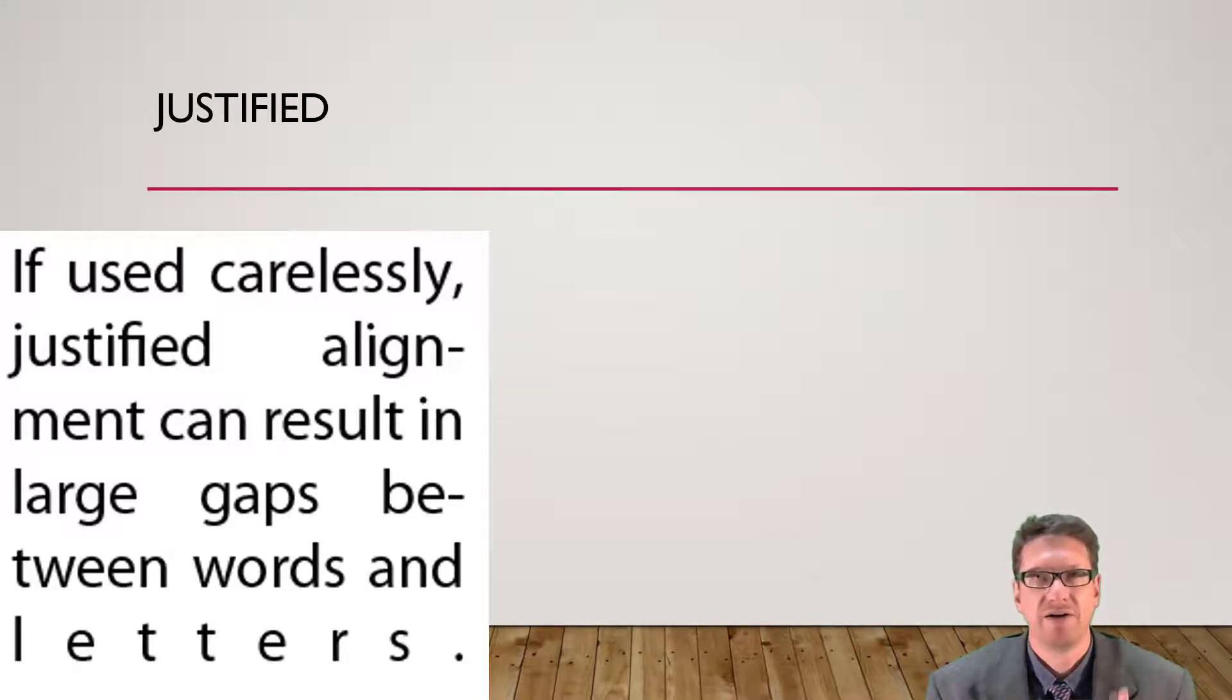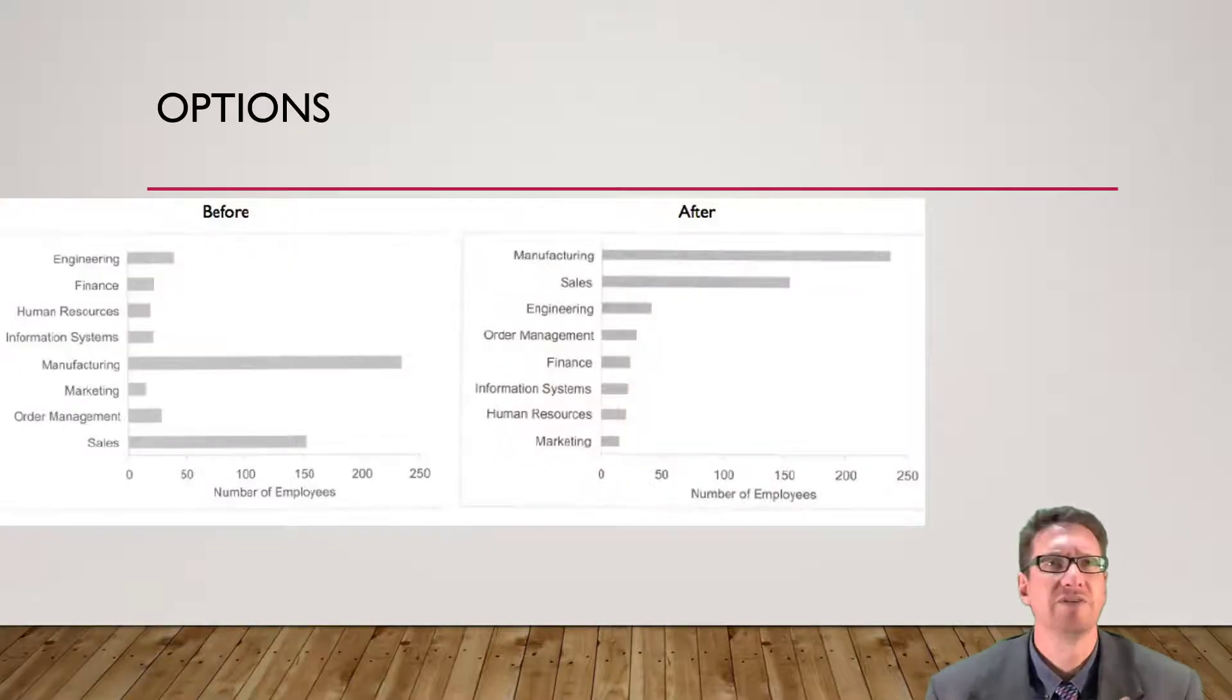You've got to make choices and there are options to choose from. Take the graph on the left. The left axis potentially is ordered alphabetically. But look at the transformation from before to after, just how much information you get when you actually order by height. You've got to make those choices to really bring out what you're trying to talk about.